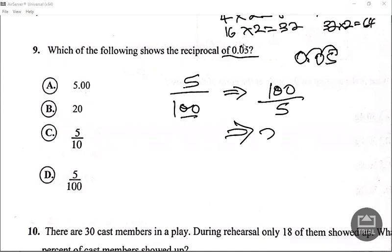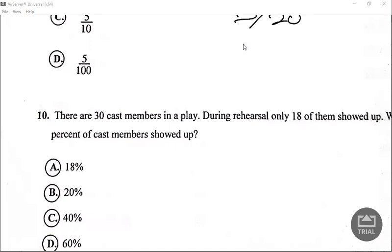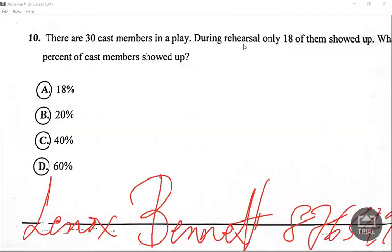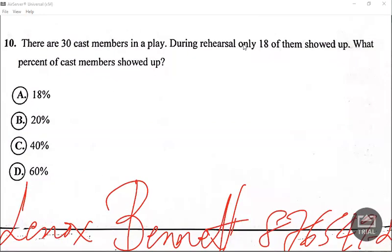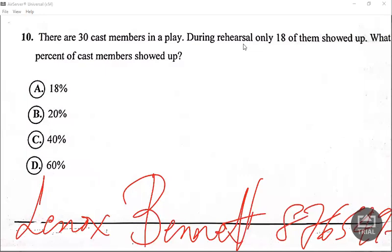Number 10. There are 30 cast members in a play. During a rehearsal only 18 of them showed up. What percentage of the cast showed up? So of course percentage means out of 100.